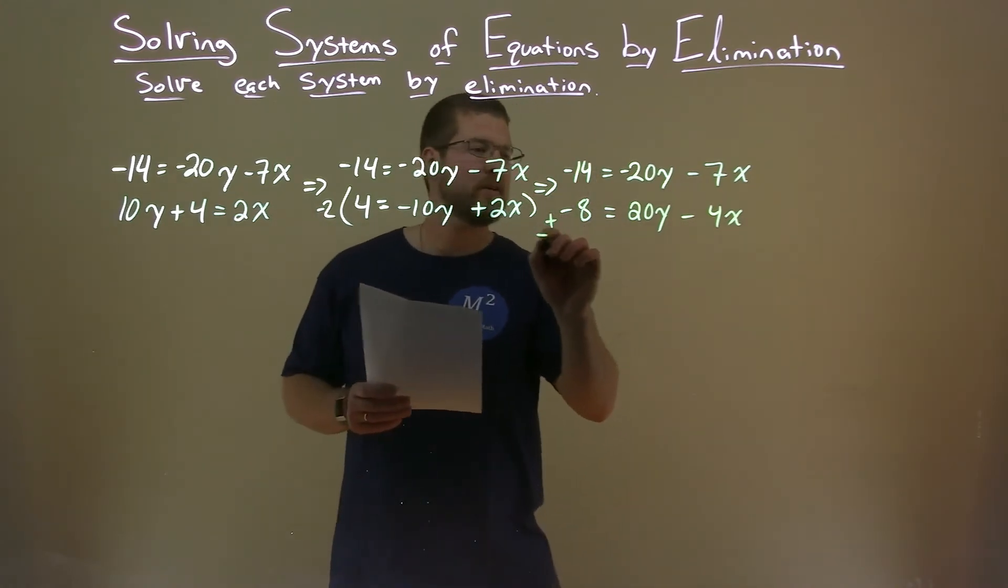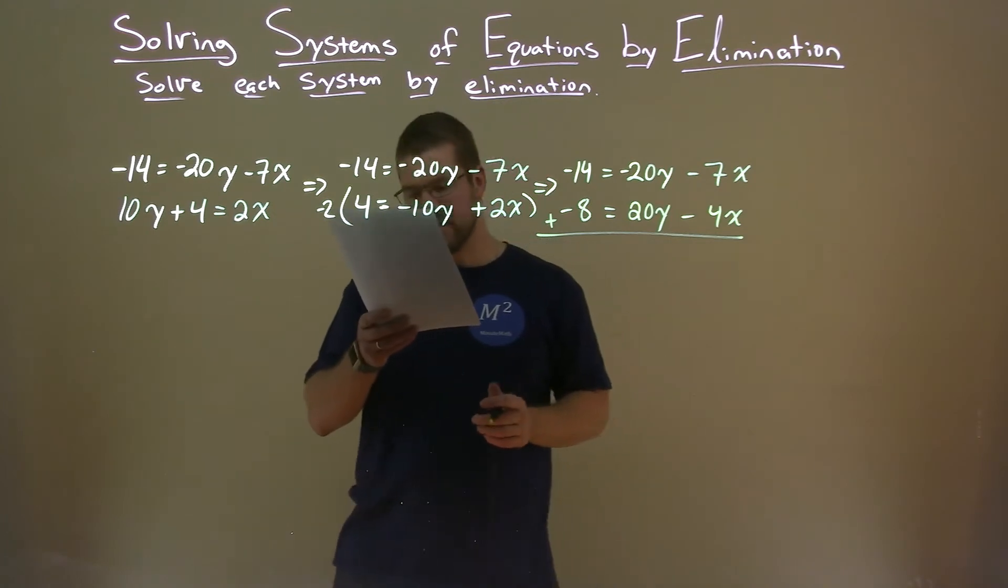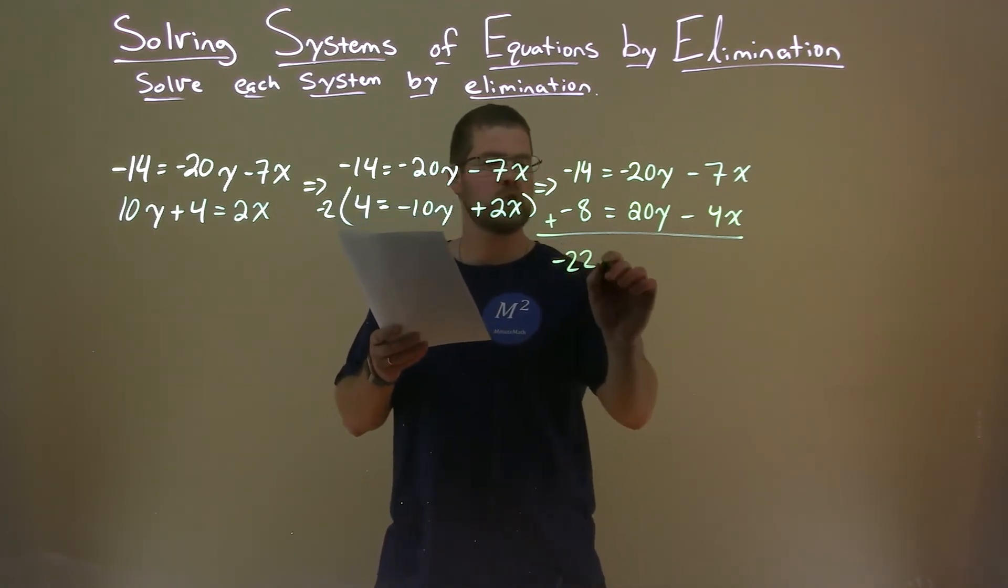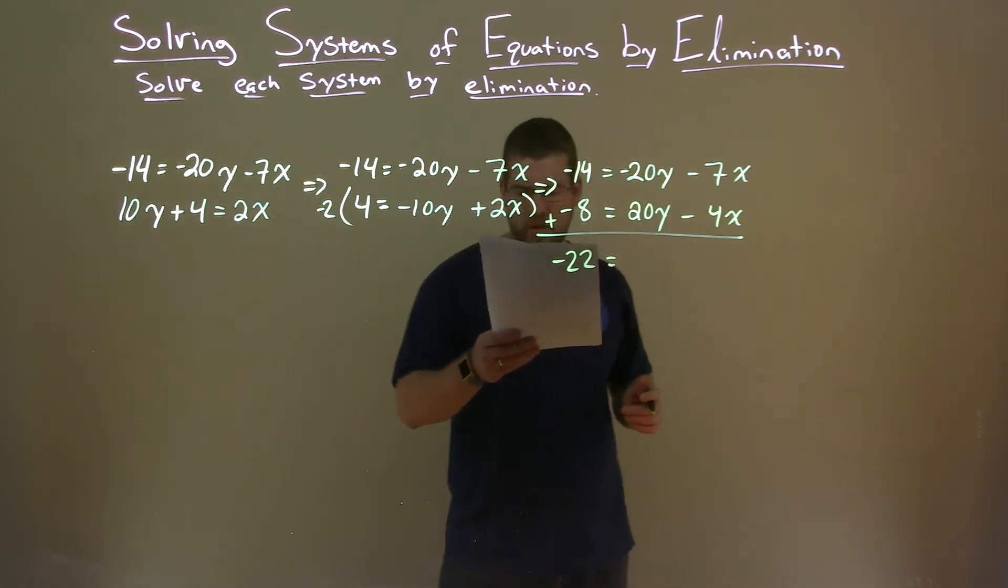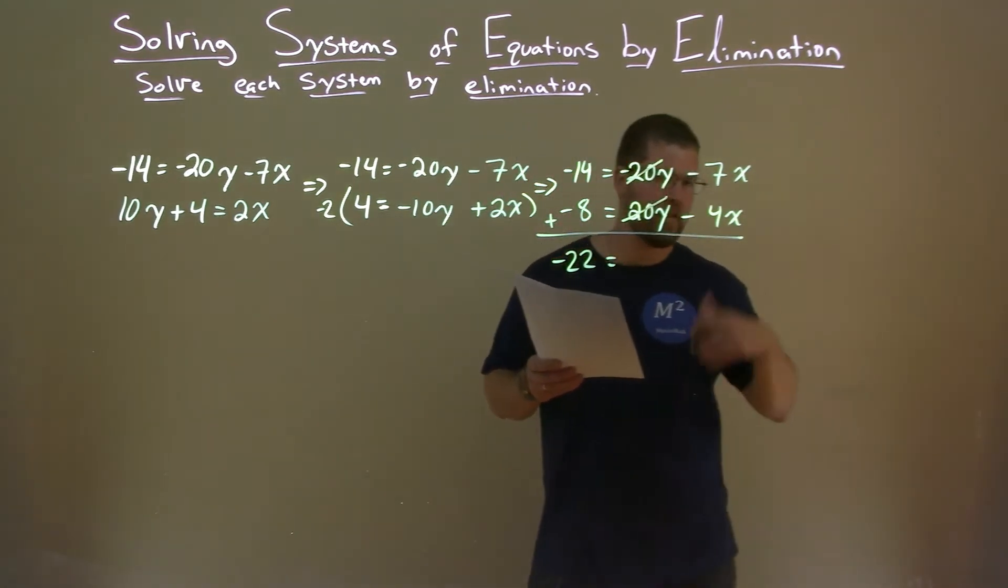So now we're going to add our two equations here, and let's see if the y's eliminate. Negative 14 plus a negative 8 is a negative 22. Negative 20y plus a 20y is 0. That was the goal of 0y. They're eliminated.